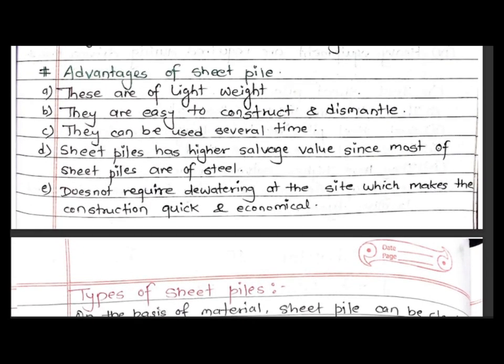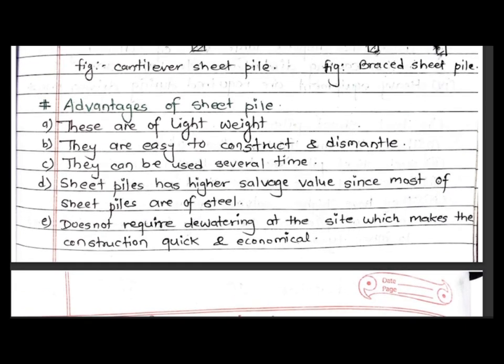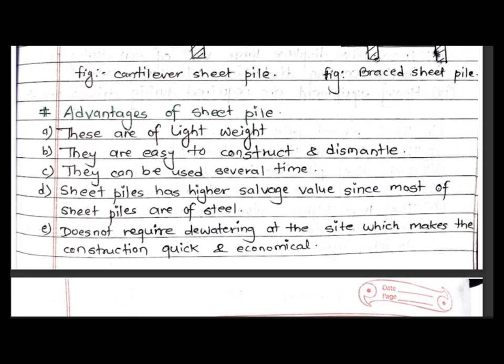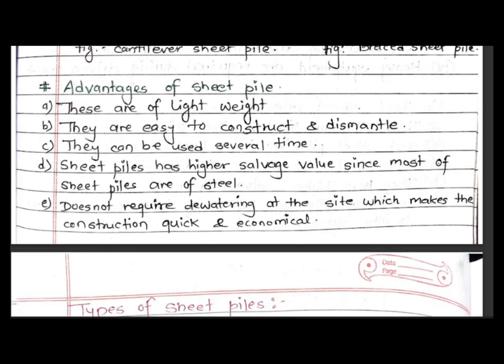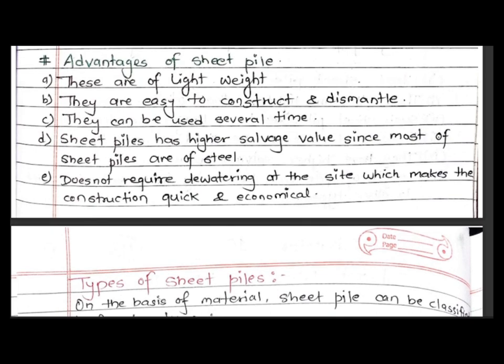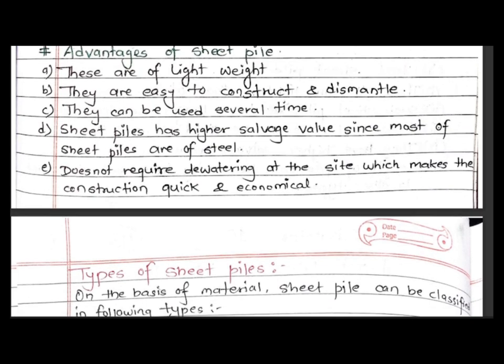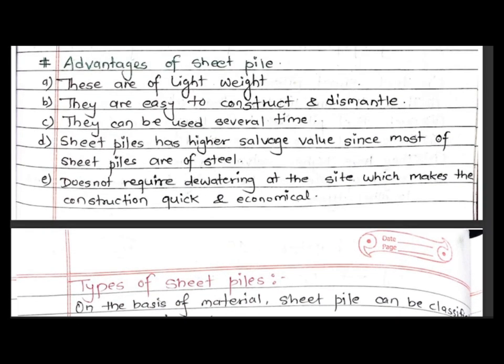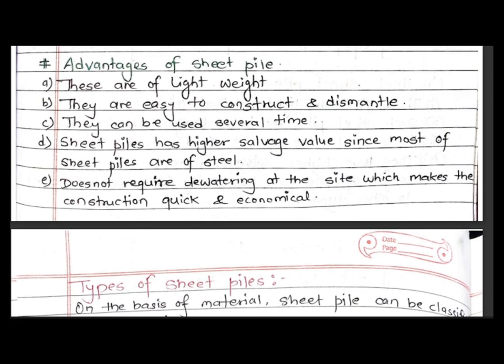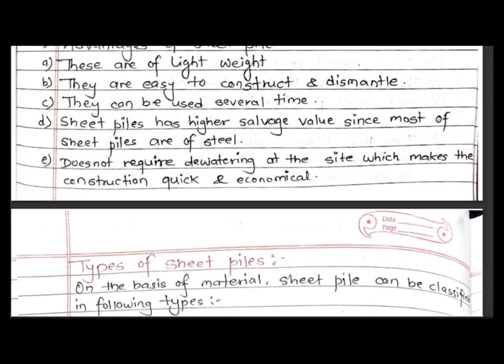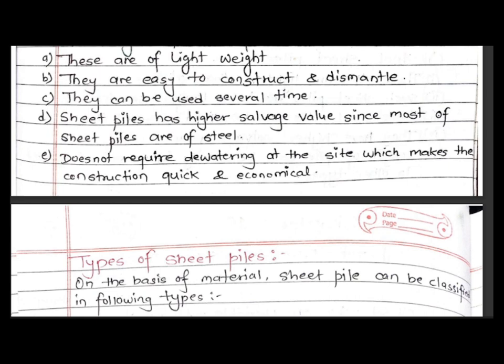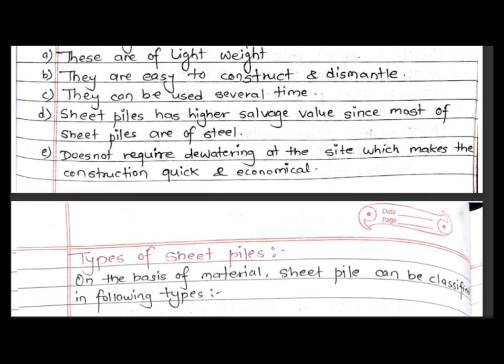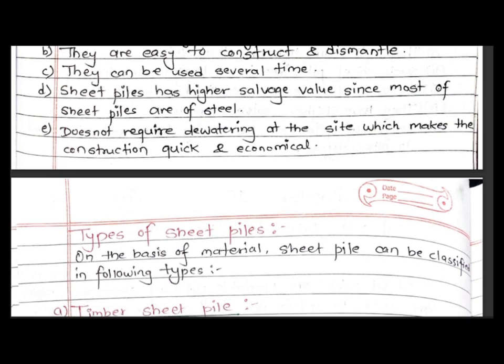Advantages of sheet pile: These are of light weight, they are easy to construct and dismantle, they can be used several times, sheet piles have higher salvage value since most are reusable, and they do not require dewatering at the site which makes construction quick and economical.